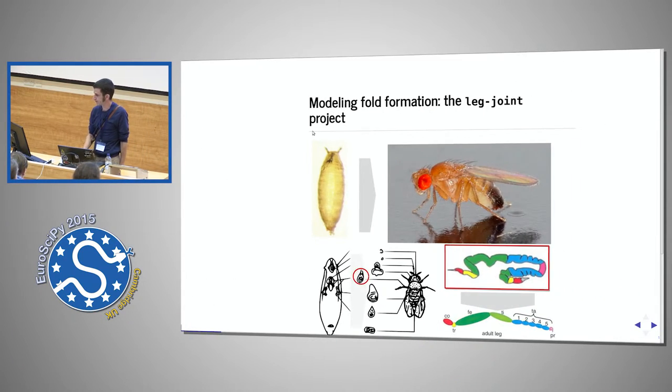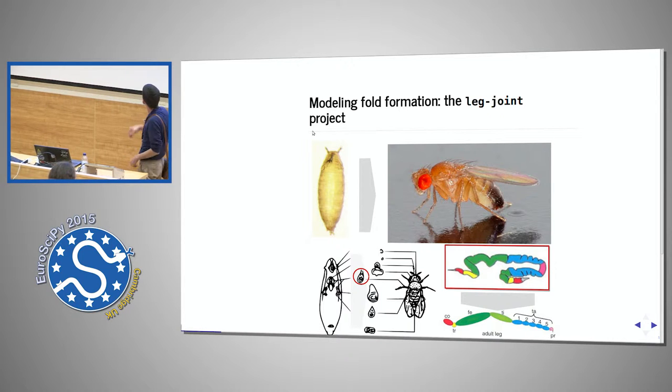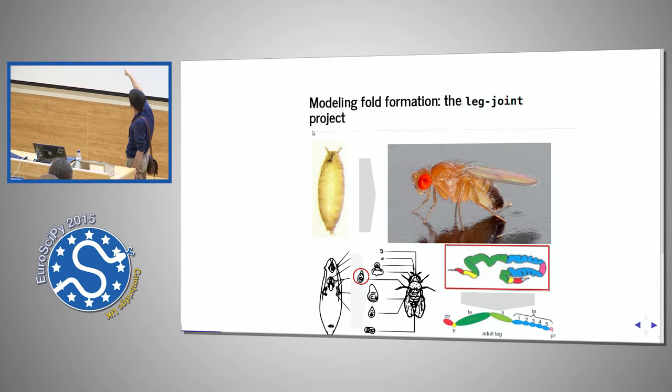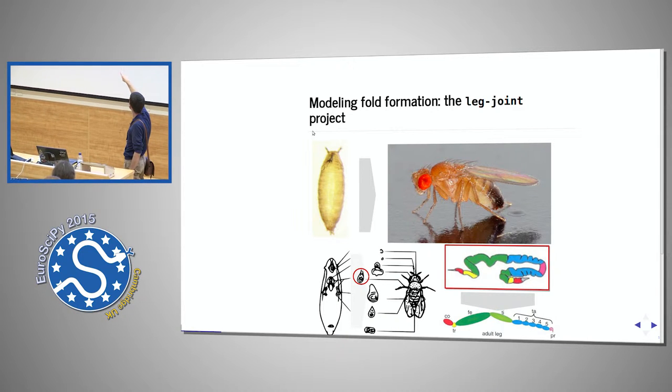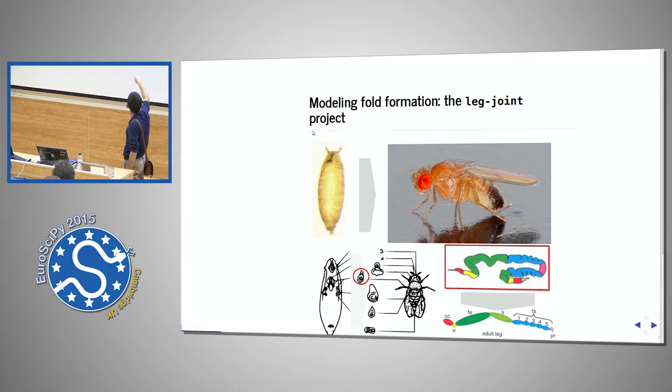We're concerned with modeling a morphogenetic event in the fruit fly, drosophila, you saw earlier on. When she passes from the pupil to the adult stage, various patches of cells called discs give rise to the various organs. And the leg disc, here outlined in red, gives rise to the leg of course.